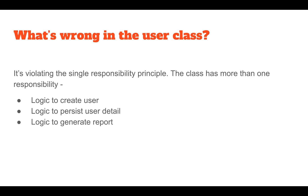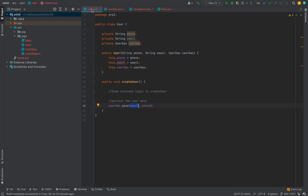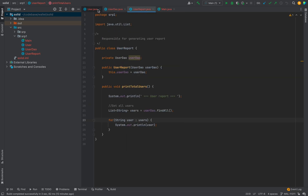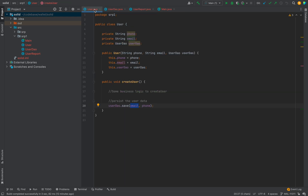Let's refactor this code to adhere to the Single Responsibility Principle. In the refactored code we have separate classes for the user, its persistence layer, and its reporting part. Each class is responsible for providing one functionality.